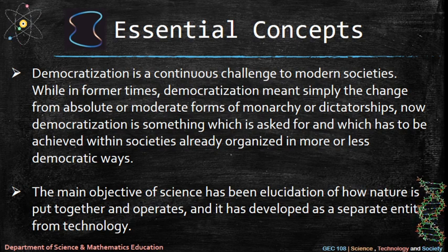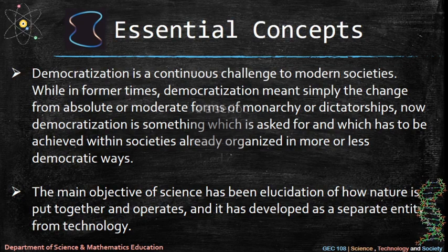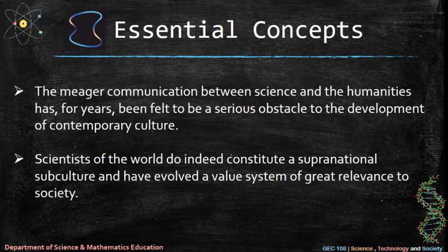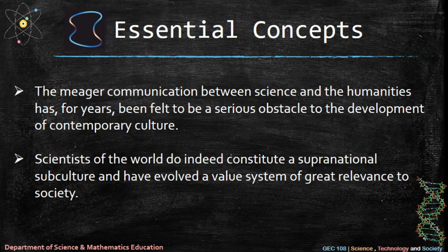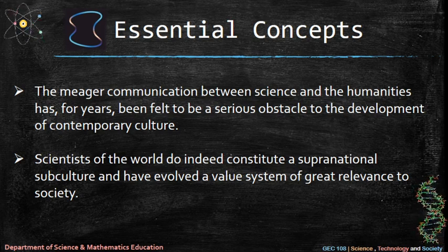The main objective of science has been elucidation of how nature is put together and operates, and it has developed as a separate entity from technology. The meager communication between science and the humanities has for years been felt to be a serious obstacle to the development of contemporary culture. Scientists of the world do indeed constitute a supranational subculture and have evolved a value system of great relevance to society.